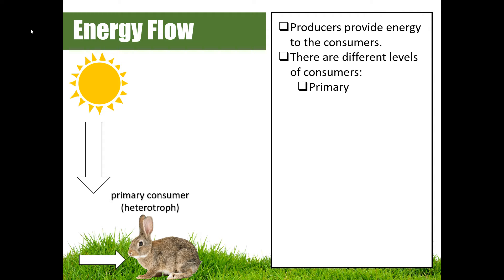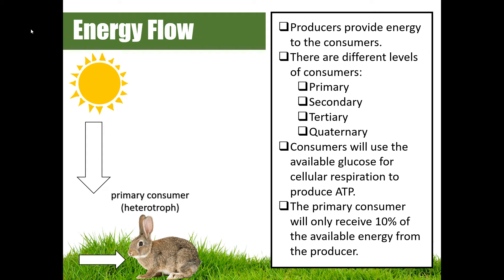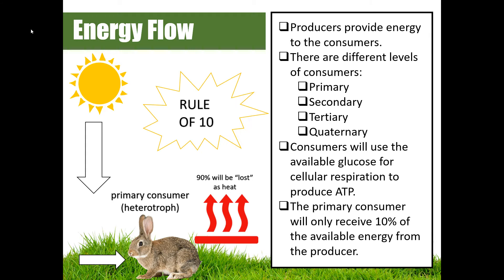A primary consumer eats producers, but you can also have a secondary consumer which eats primary consumers, a tertiary consumer which eats secondary consumers, and even a quaternary consumer which eats the tertiary consumer. Consumers use the available glucose for cellular respiration to produce ATP. The primary consumer will only receive about 10 percent of the available energy from the producer — we call this the Rule of 10. So if the grass has 100 joules of energy, only 10 percent of that will actually move into the rabbit.